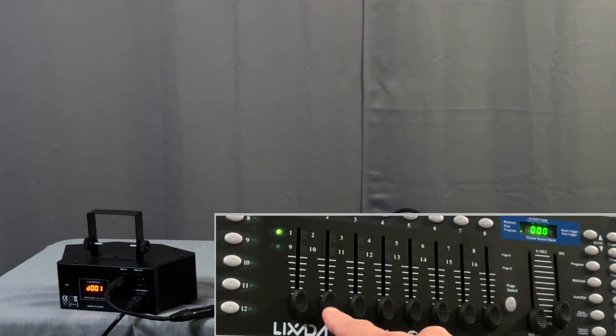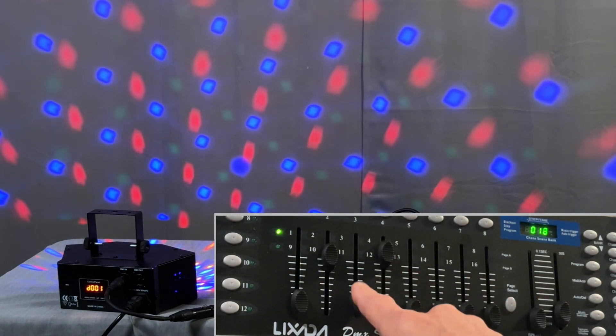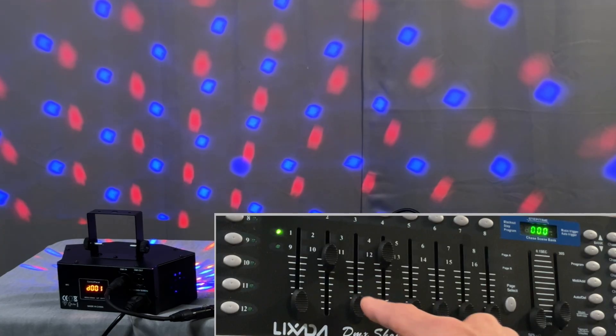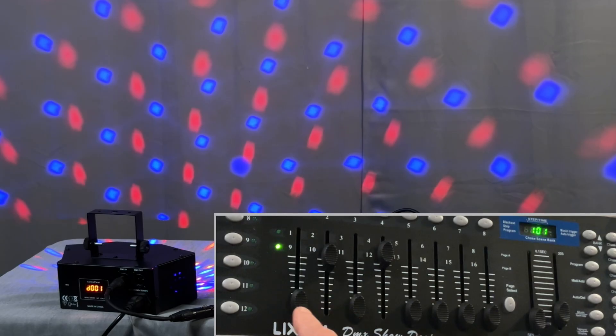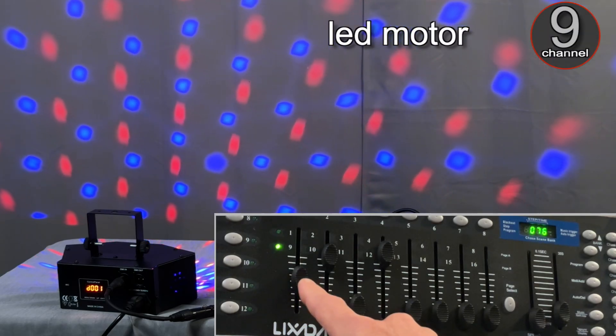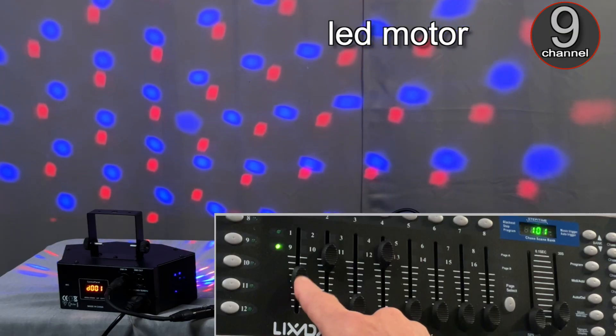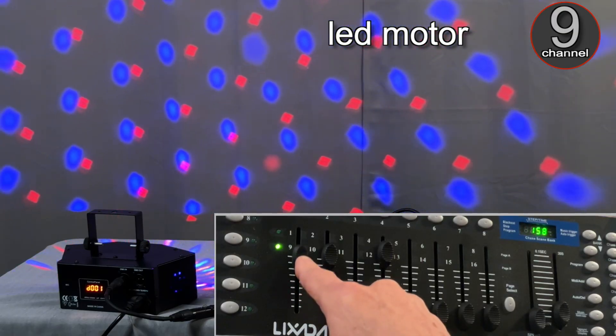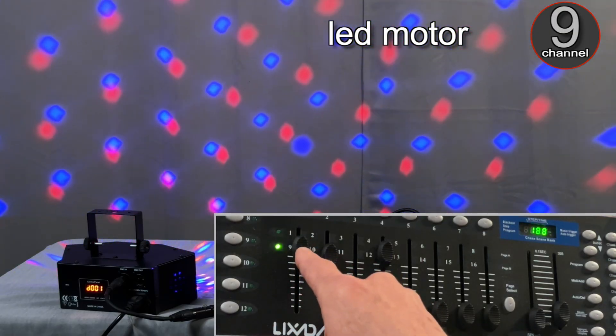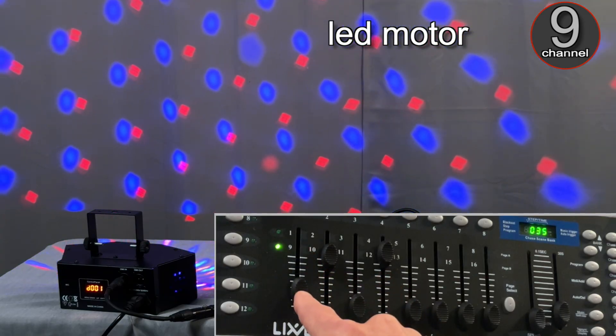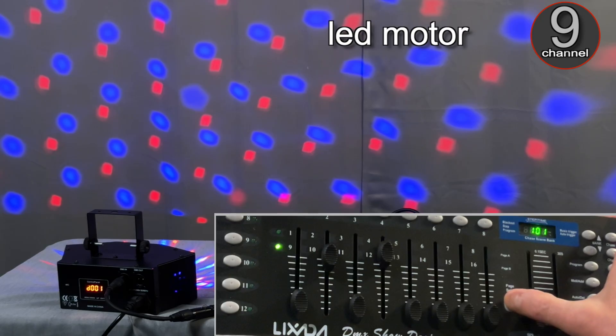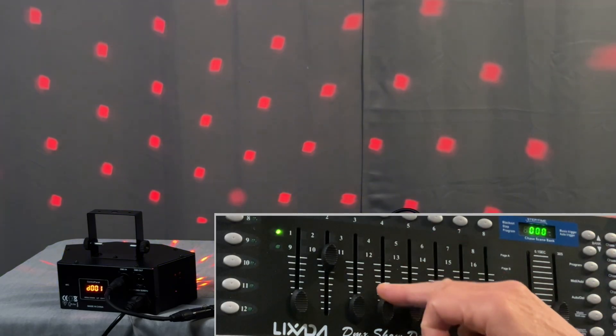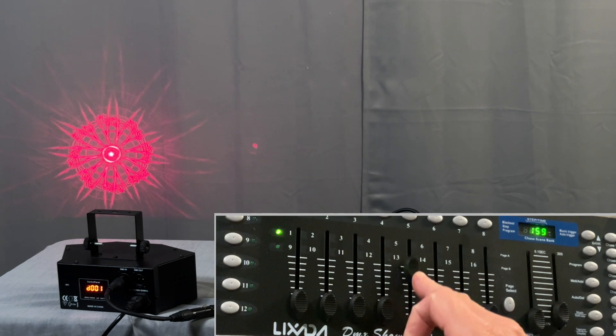Now let's turn on a red and a blue LED. And we're going to go to the next page selection to go to channel 9. Channel 9, you have control over the LED motor. So you can make it faster or slower. We're going to turn that off. Let's go back to the first page. Turn off the LEDs. Let's turn on the lasers.